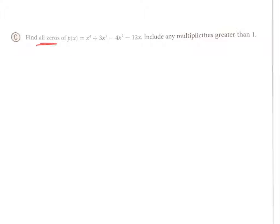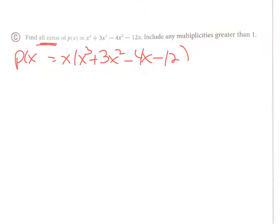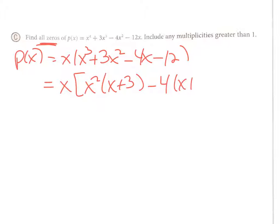Find all zeros again. This one has four terms, and another way to factor four terms is by grouping. But first, I notice they all have an x, so before trying to factor by grouping I'm going to take an x out of all of them. That leaves x(x³ + 3x² − 4x − 12).